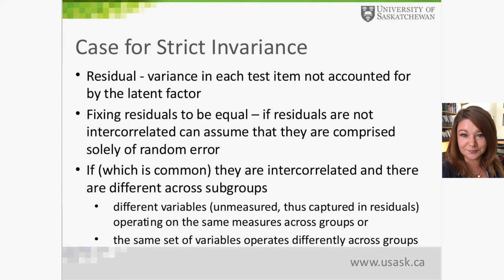You really need to constrain the residuals and see if model fit is still good. If residuals are correlated and there are differences across subgroups, this means that something unmeasured — captured in the residuals — is operating on these measures across groups, or the same set of variables operates differently across groups. Essentially, strict invariance is looking for systematic differences in these residuals across subgroups, for instance for English versus French speakers given the translation of the CES-D.